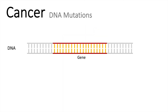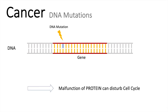Let's say this gene here will code for a protein which is involved in cell cycle progression. When there is a DNA mutation — which can happen due to several causes such as smoking, UV light, and many more random factors — and this mutation causes a change in the protein, that can possibly lead to a malfunction of the protein and disturb the cell cycle. For example, a protein involved in cell cycle progression could become highly accelerated due to the mutation, and that might be the origin of a cancer cell.